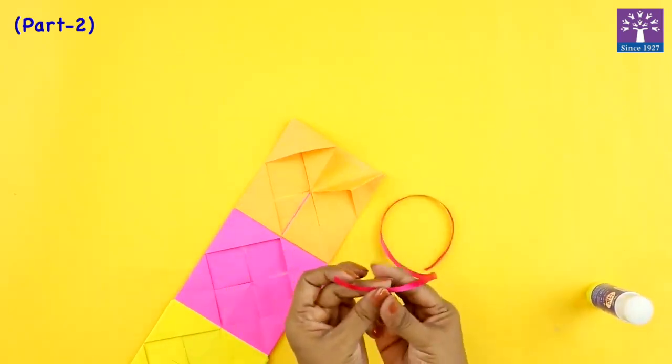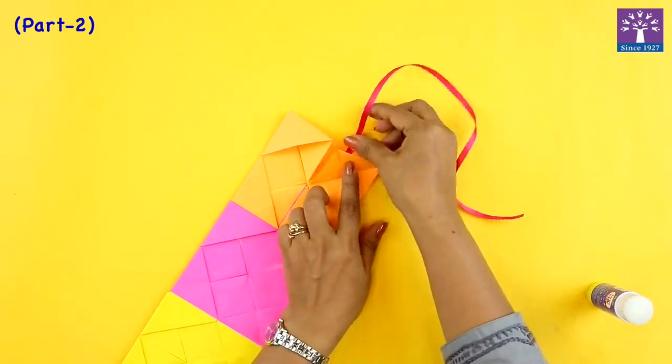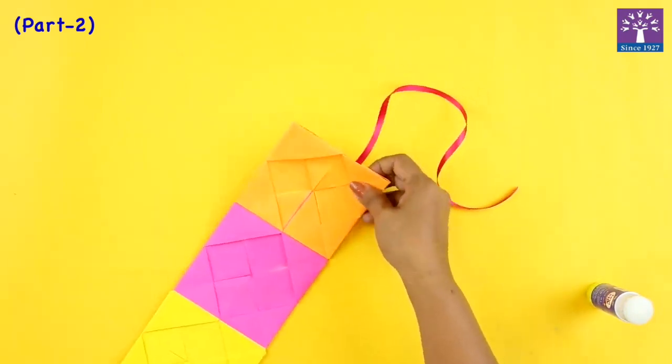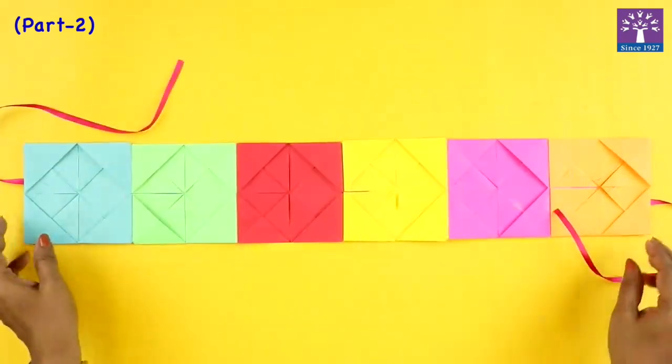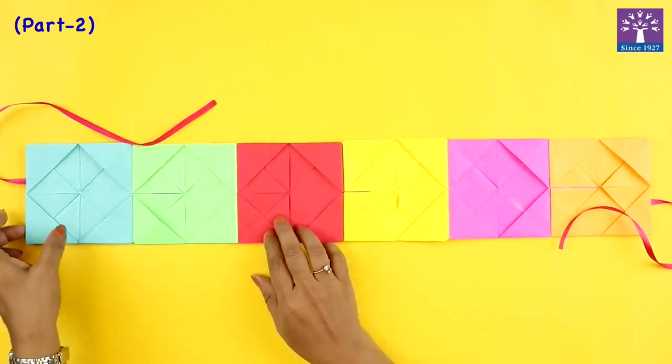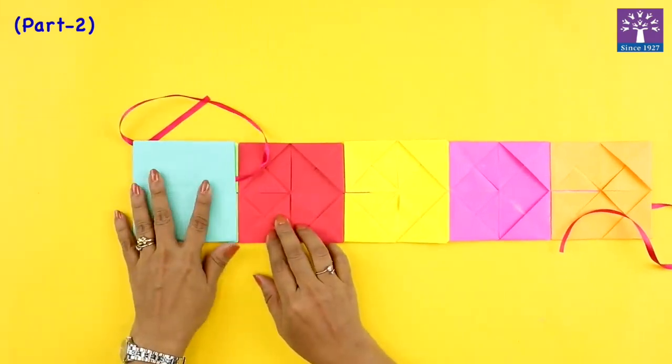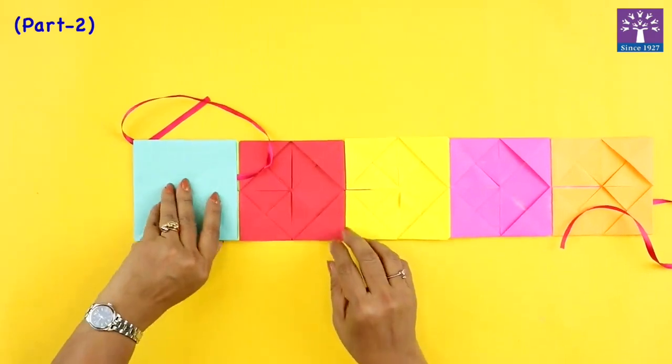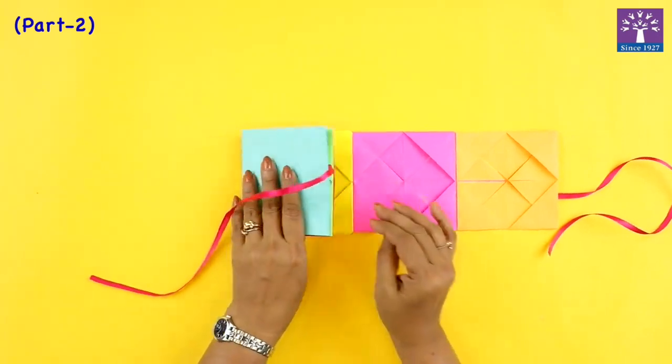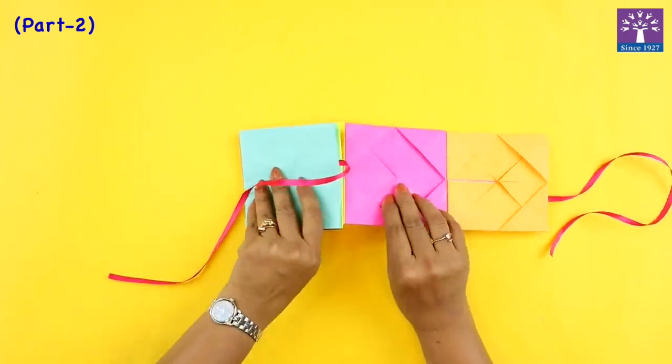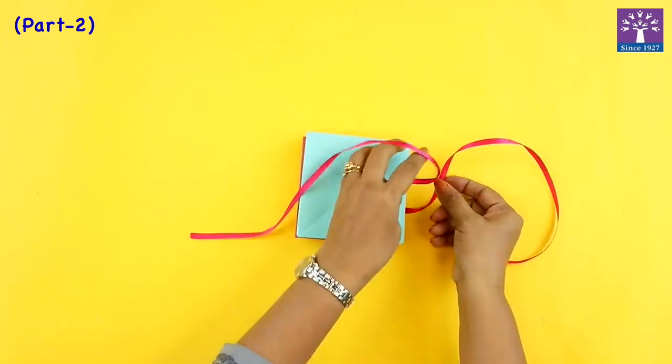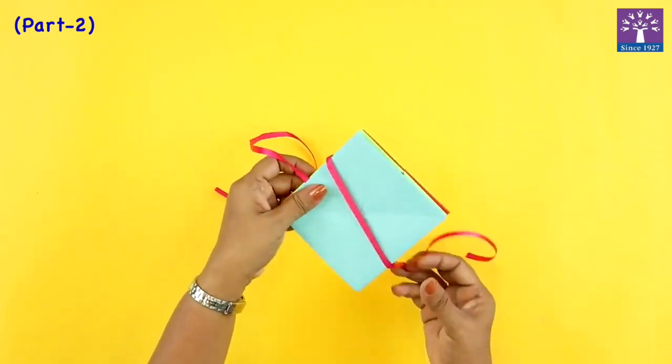We will glue the second ribbon. So you see our photo album is now ready. Now we can fold this album like this, fan fold once up, once down, and tie it with a ribbon.